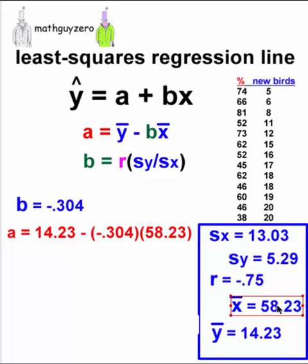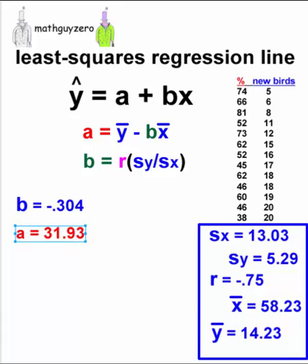Let's do a little bit more math. And then we get a value for a, 31.93.